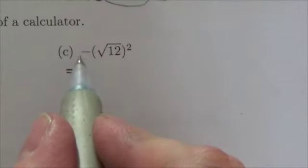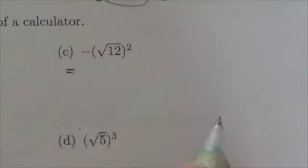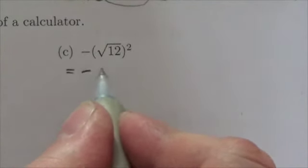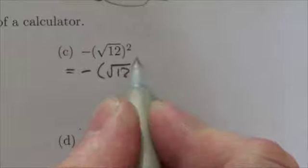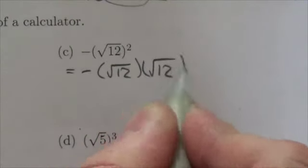This is saying, this is the negative of root 12 squared. Now, it's important to know that the negative is not being squared. Just the root 12 is being squared, so there's two of those.